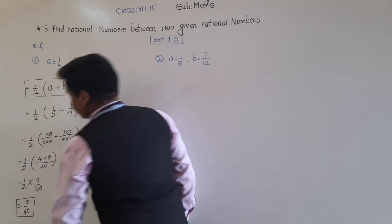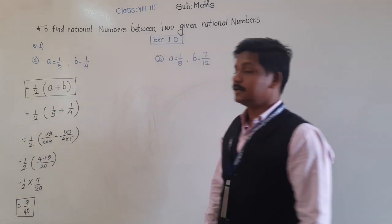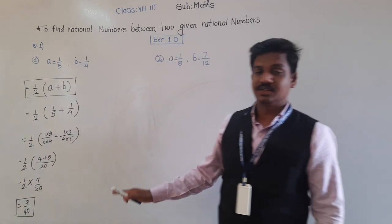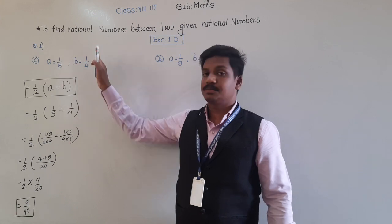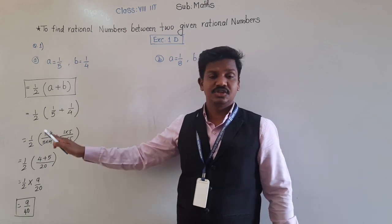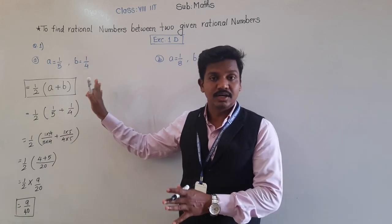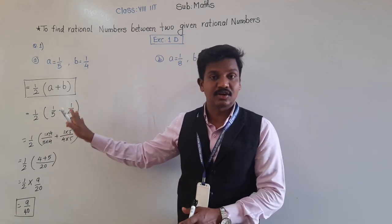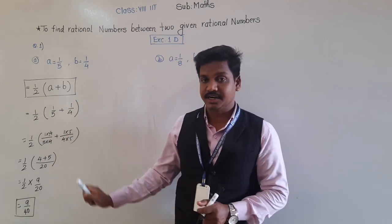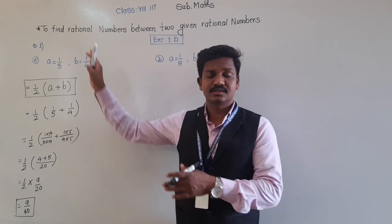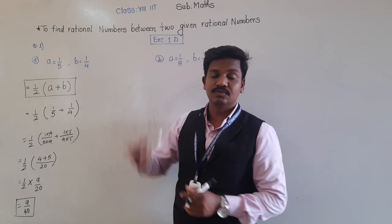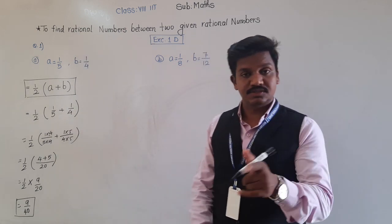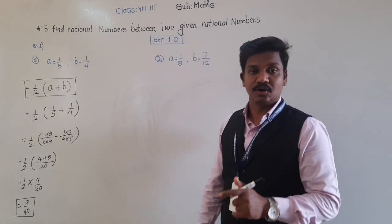So our answer is 9/40, which is the rational number between 1/5 and 1/4. There are uncountably infinite rational numbers we can find; since only one was asked for, we used this formula.